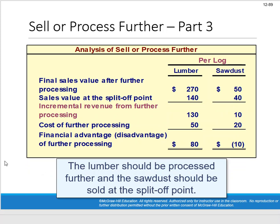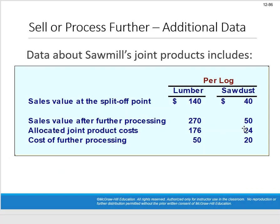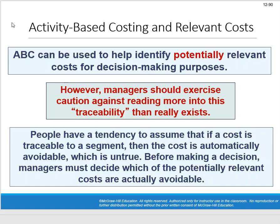For sell or process further decisions, ignore allocated joint product costs — they don't belong. Just look at incremental sales and incremental costs. Finally, activity-based costing can be used to help identify potentially relevant costs for decision-making purposes. ABC offers a different view of what causes costs, which connects back to identifying what's truly relevant or irrelevant in managerial decisions.